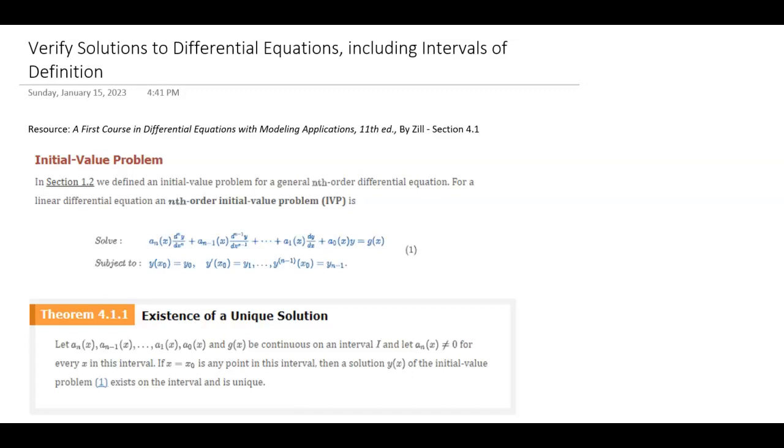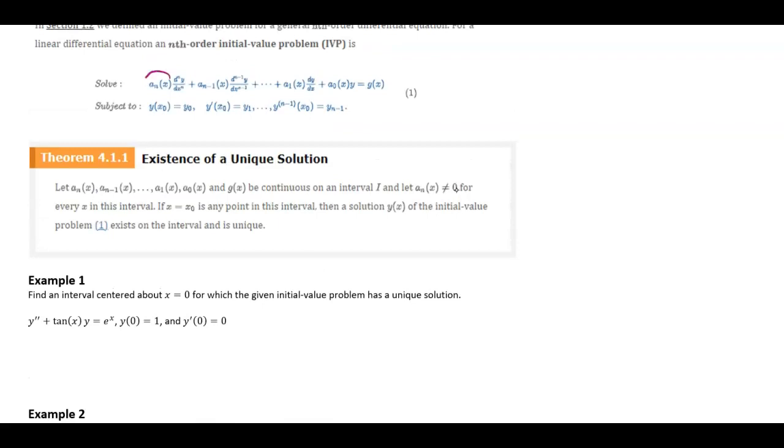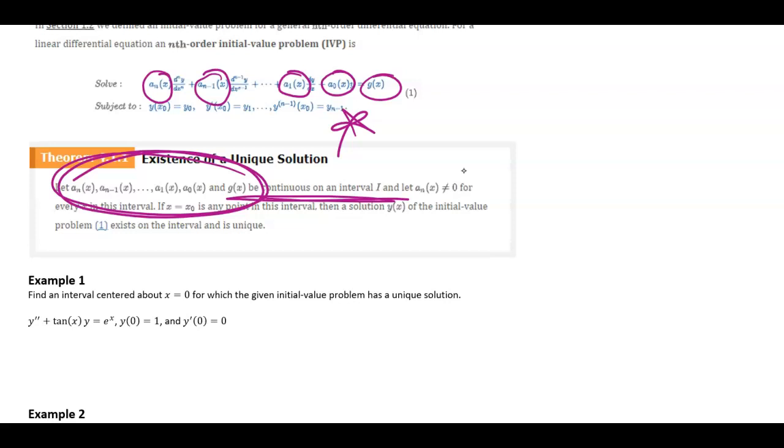Some reminders here about what an initial value problem is, and also that you must have continuity of all of these functions of x on that same interval in order to have a unique solution. So in order to actually find, with your initial conditions, a unique one-of-a-kind solution, just remember that all of those f of x functions have to be continuous on the same interval, and your leading one can never be 0 as well. The reason being, if you ended up having a 0 here, you would no longer have an nth order, you would have an n minus 1 order. So to keep it to that nth order for the derivative, that leading function cannot be 0.